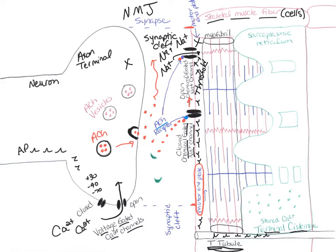Now we want to discuss what happens during the excitation-contraction coupling process. In this process, those action potentials get down to the area called the terminal cisternae. The terminal cisternae is a bunch of channels that wrap around each individual myofibril inside the muscle cell. Inside a muscle cell are all these organelles — the terminal cisternae is one area. It's part of an organelle called the sarcoplasmic reticulum, specifically the area near where the T-tubule is.